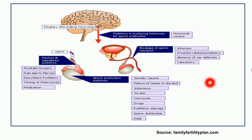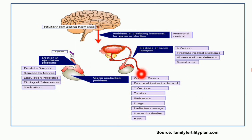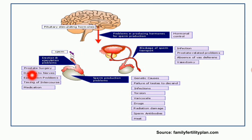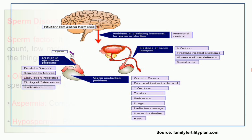This diagram further illustrates causes of male sterility: sperm production problems due to genetic causes, failure of testes to descend, infections, torsion, varicocele, drugs, or sperm antibodies; blockage of sperm transport due to infection or absence of vas deferens; problems producing hormones for sperm production (hormonal control via the brain or hormone-secreting glands); and ejaculation problems, possibly due to prostate surgery or nerve damage.